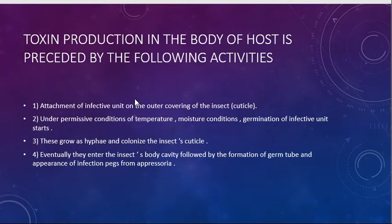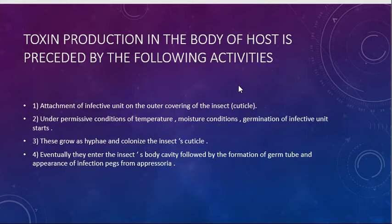Now we will see how these fungi basically act — how do they kill the insects? The following activities precede toxin production in the body of the host. At first, there is attachment of infectious units on the outer covering of the insect, which is known as the cuticle. Then, under permissive conditions of temperature and moisture, germination of the infectious units starts.